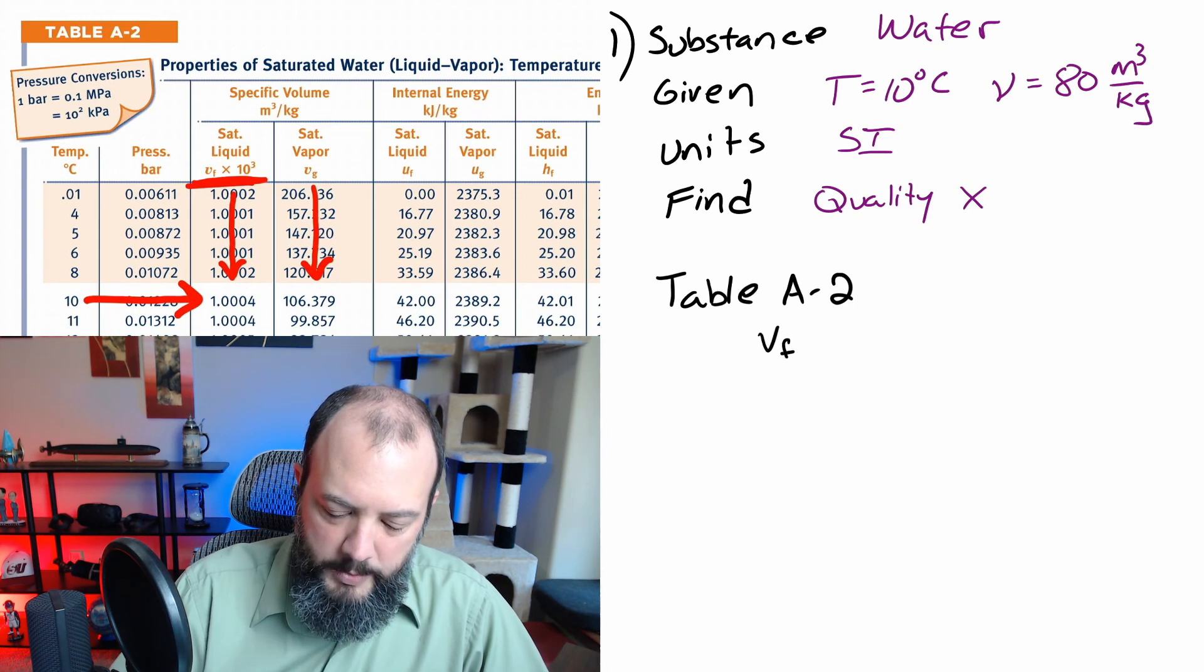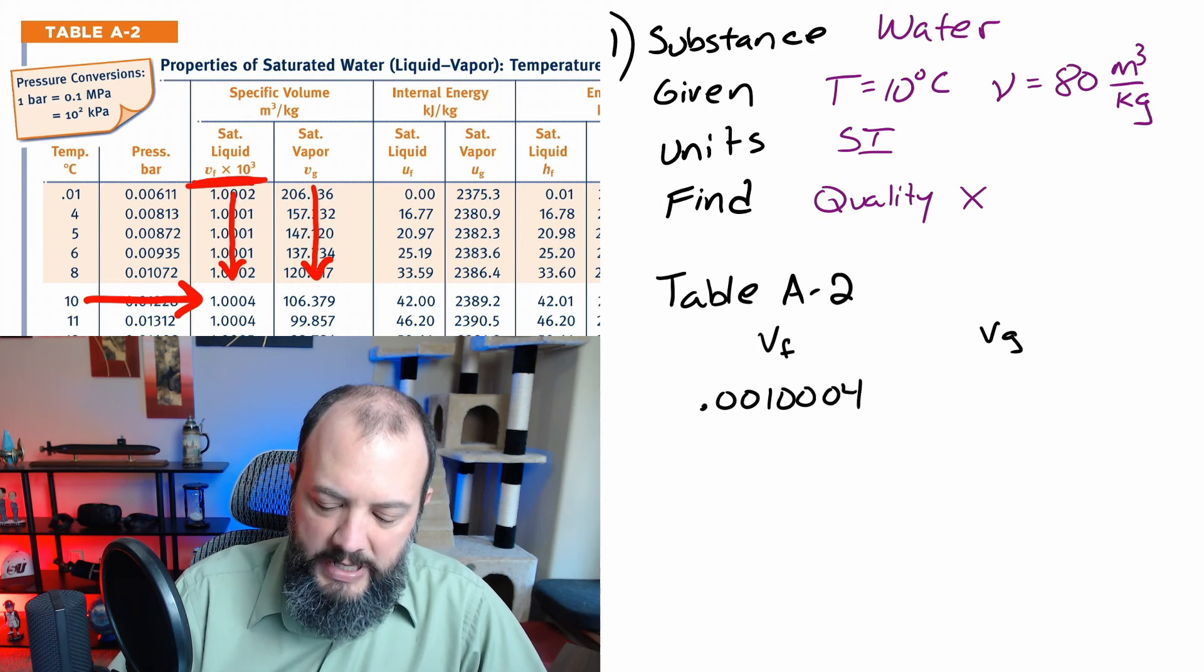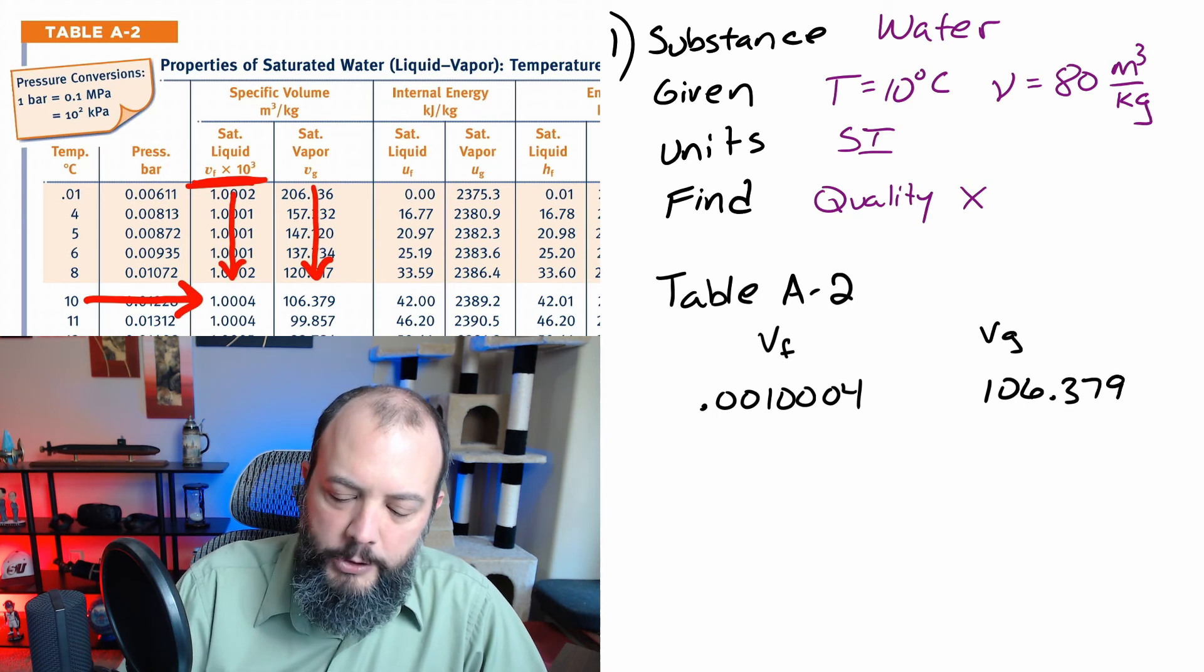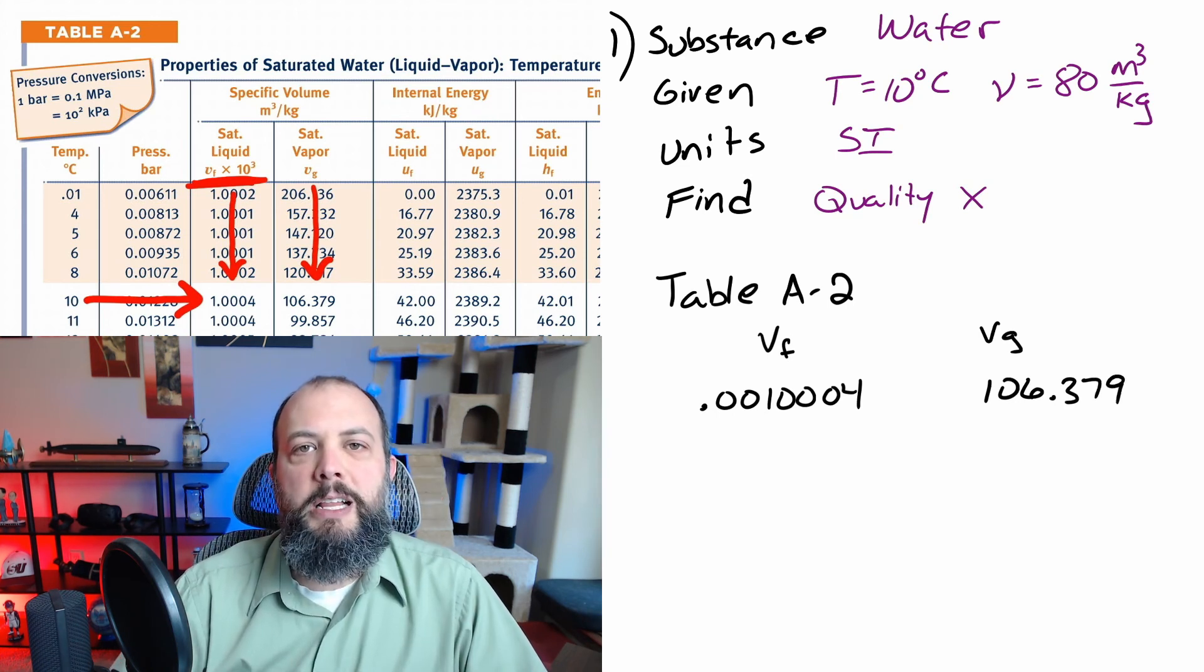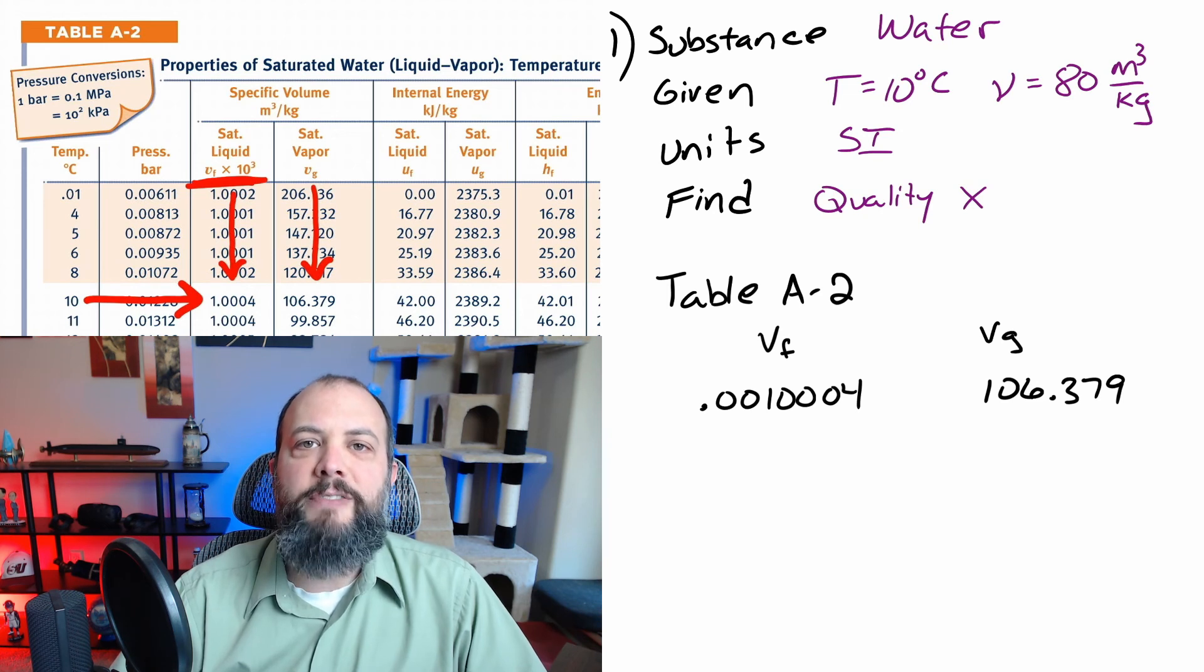For specific volume the fluid value is 0.001 and the gas value is 106. One of the most common mistakes for this problem has to do with the specific volume for a fluid. If you notice at the very top of the column there's the times 10 to the third. This tells you that every number in that column has already been multiplied by a thousand. So when you use it in the math you need to actually divide by a thousand and so this value here is 0.001 not 1.